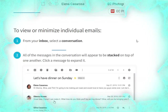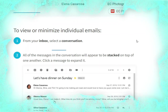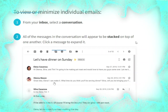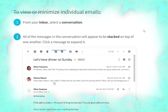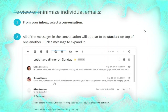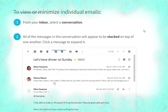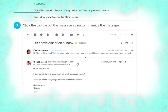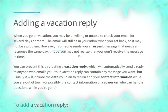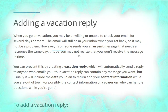To view or minimize individual messages in a conversation, from your inbox select a conversation. All of the messages in the conversation will appear stacked on top of one another. Click a message to expand it, as shown. Click the top part of the message again to minimize it, as shown in the picture.